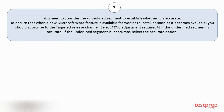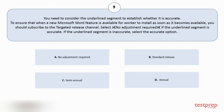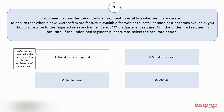Question number nine. You need to consider the underlined segment to establish whether it is accurate. To ensure that when a new Microsoft Word feature is available for a worker to install as soon as it becomes available, you should subscribe to the targeted release channel. Select this adjustment if the underlined segment is accurate; if inaccurate, select the accurate option. Your options are: A. No adjustment required. B. Standard release. C. Semiannual. D. Annual. The correct answer is option A.